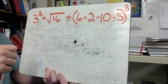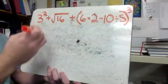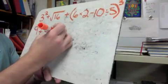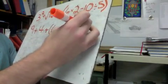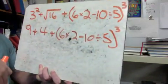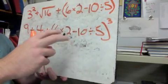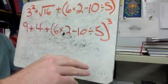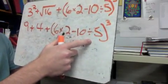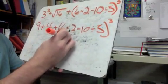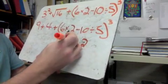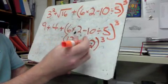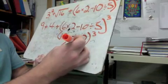For this one, we're going to start by simplifying everything we can right now. 3 to the second power — 3 times 3 is 9. The square root of 16 is 4. Bring everything else straight down. Keep our little third power on the outside. Now we're going to do the parenthesis. Inside the parenthesis, multiplication and division from left to right — neither one comes first, just whichever comes first left to right. So I can do these as two separate problems: 6 times 2 is 12 and 10 divided by 5 is 2. Then 12 minus 2 is 10. So now I've got 10 with a little 3 on the outside.